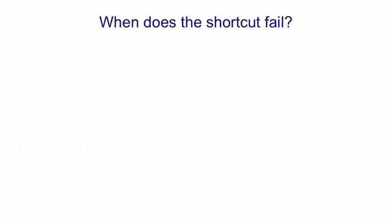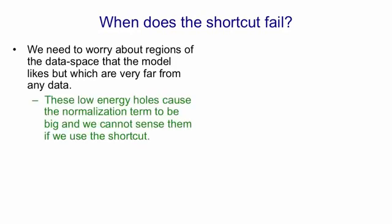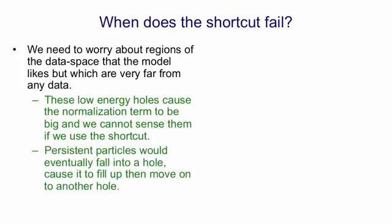So this shortcut of only doing one full step to get the reconstruction fails for places that are far away from the data. We need to worry about regions of the data space that the model likes but which are very far from any data point. These low energy holes cause the normalization term to be big and we can't sense them if we use the shortcut. If we used persistent particles where we remembered their states and after each update we updated them a few more times then they would eventually find these holes. They'd move into the holes and the learning would cause the holes to fill up.